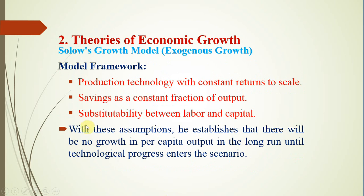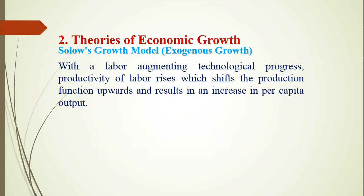The model rests on three assumptions: first, a production technology with constant returns to scale; second, savings as a constant fraction of output, similar to the Harrod model; and third, substitutability between labor and capital — the fixed coefficient production function is dropped. With this assumption, Solow concludes there will be no growth in per capita output in the long run until technological progress enters the scenario. With labor-augmenting technological progress, the productivity of labor rises, shifting the production function upward and resulting in an increase in per capita output.